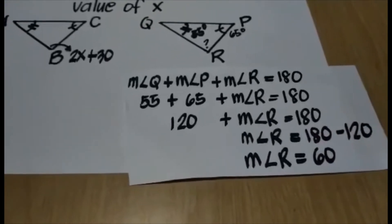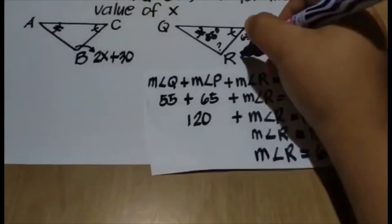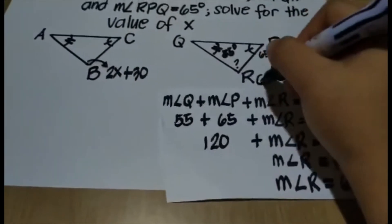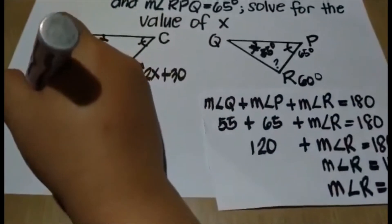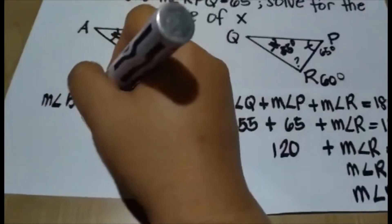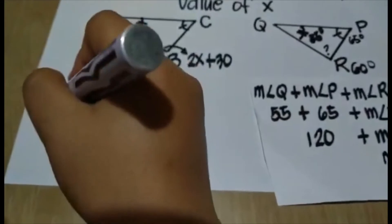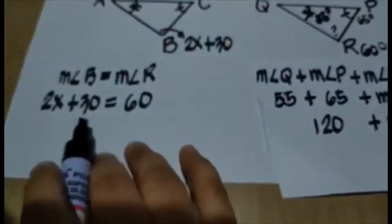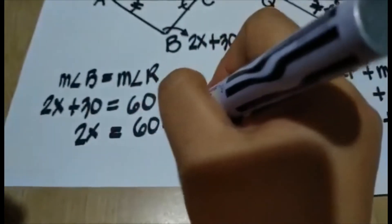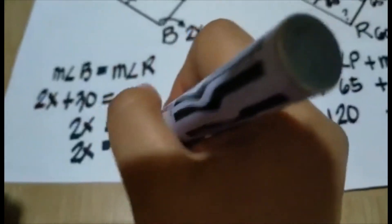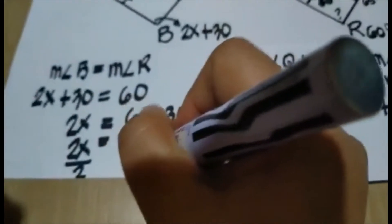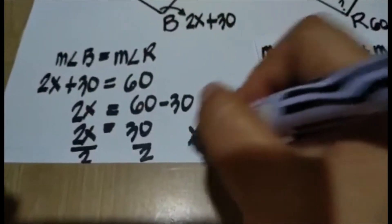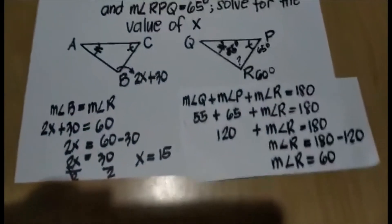So 180 minus 120 is 60. Therefore, the measure of angle R is equal to 60 degrees. Now since we have this value, we can compute for the value of X. Measure angle B is equal to measure angle R. Since angle B is 2X plus 30, we equate it to 60. Applying the subtraction property of equality, 2X equals 60 minus 30, which gives us 2X equals 30. Using the division property of equality, we divide both sides by 2. So X is equal to 15.